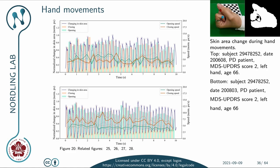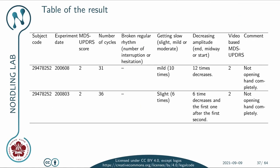Looking at the quantification: during the first recording 31 cycles were observed and during the second 36 cycles. We see some mild slowing 10 times in the first and slight slowing 6 times in the second. We have a decrease in amplitude 12 times and 6 times for the second recording. Doctor Tan classified this patient as having an MDS-UPDRS score for hand movement of two.